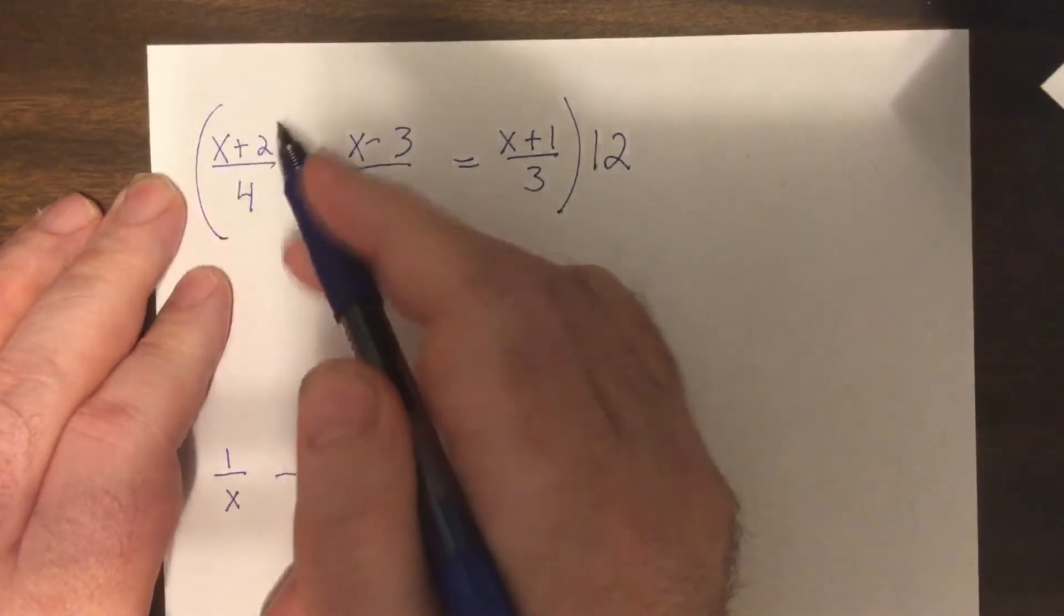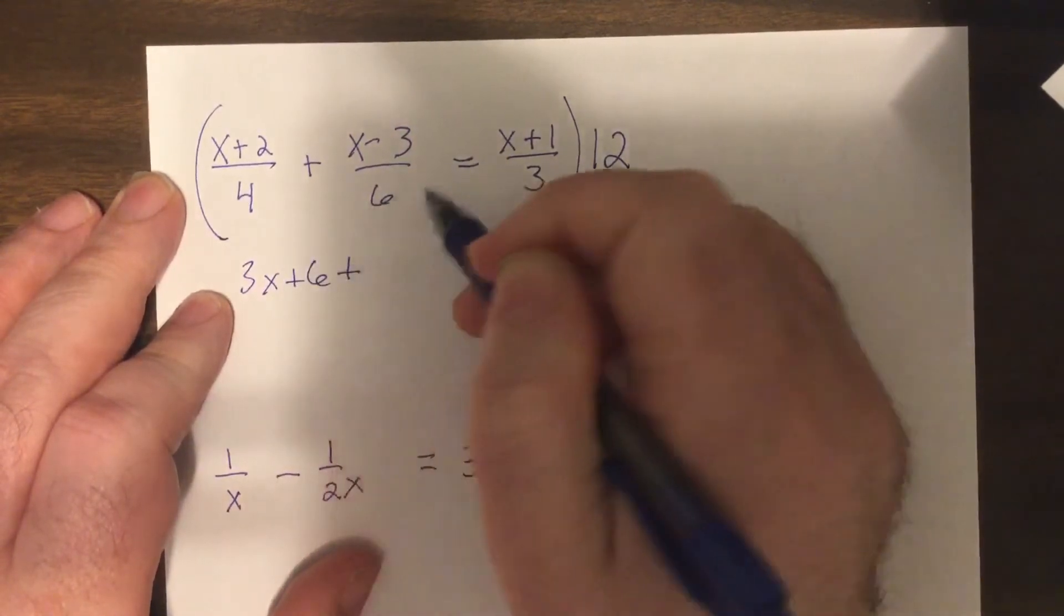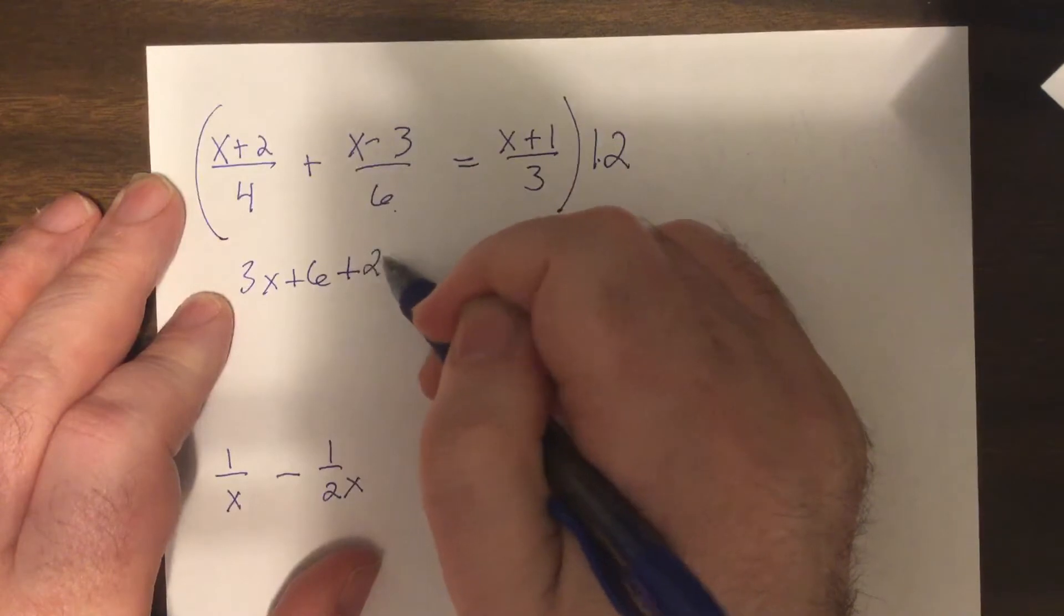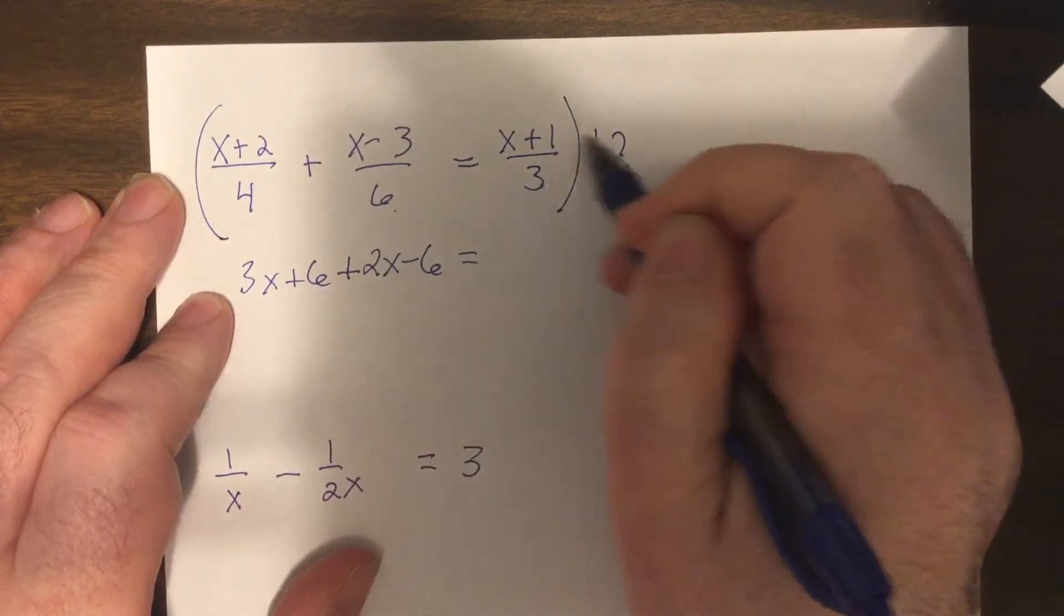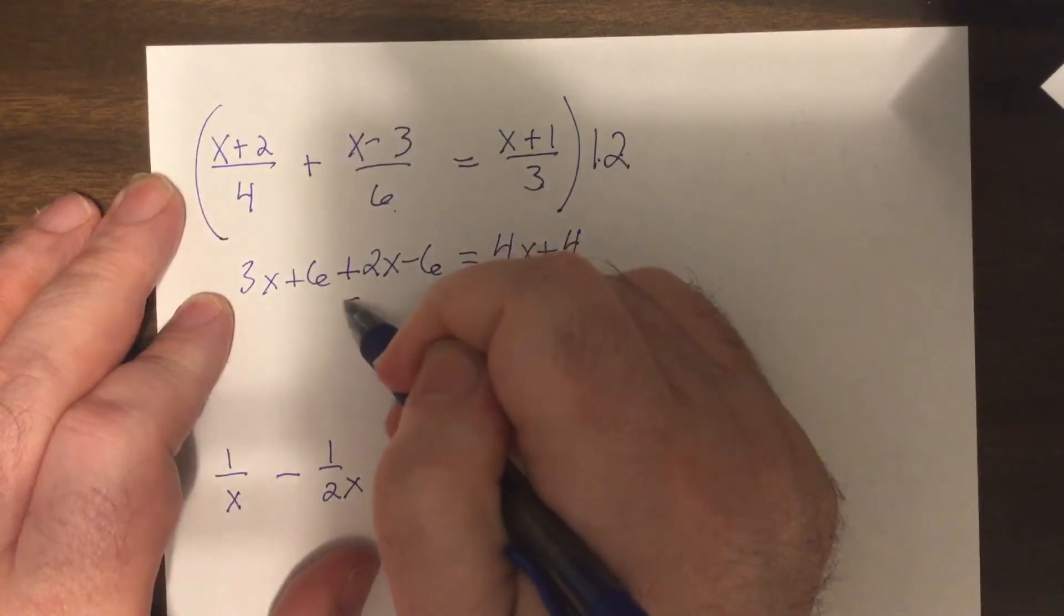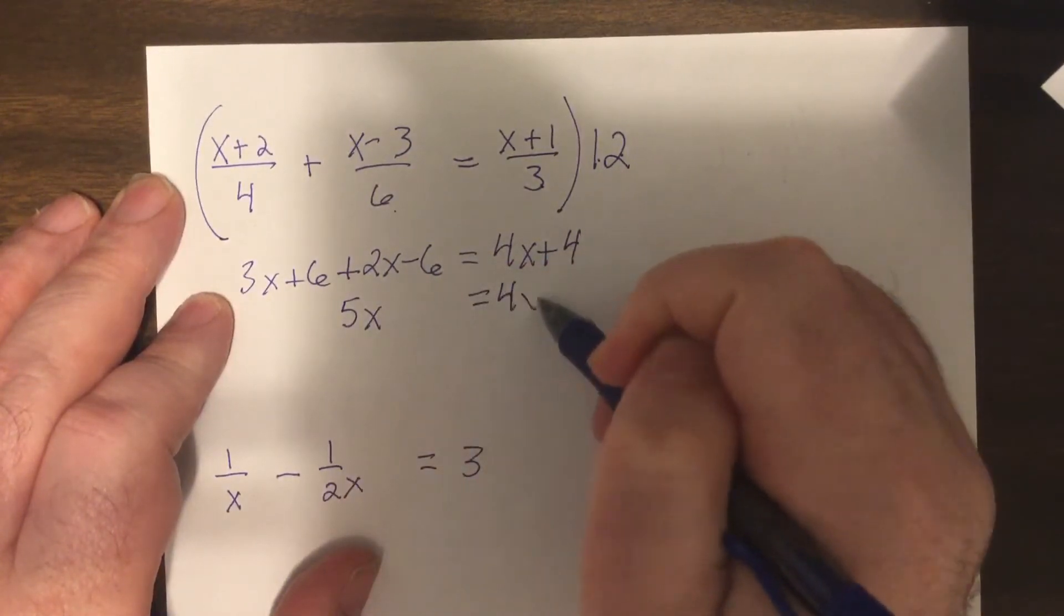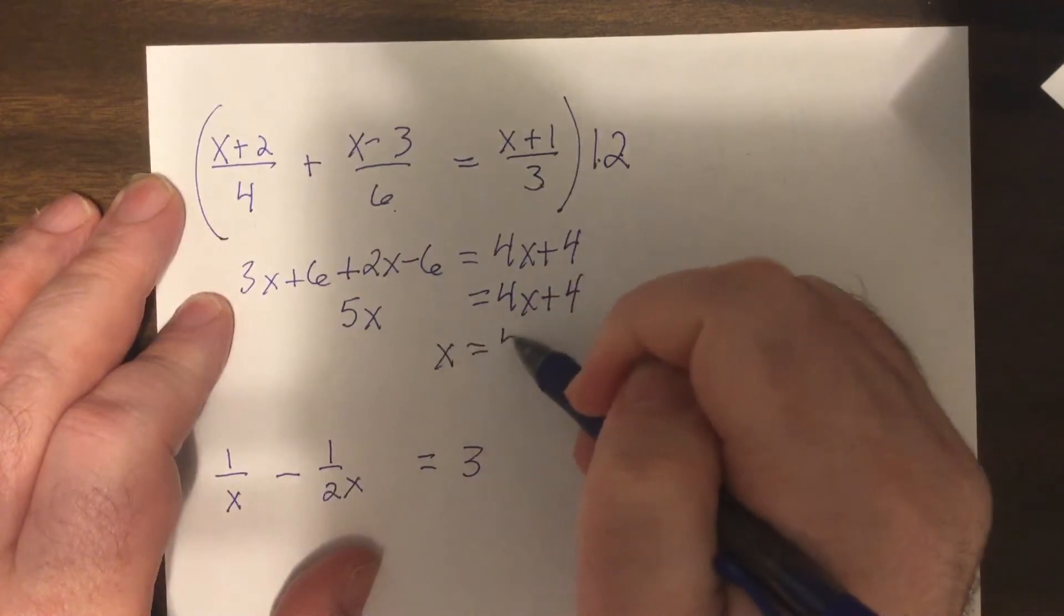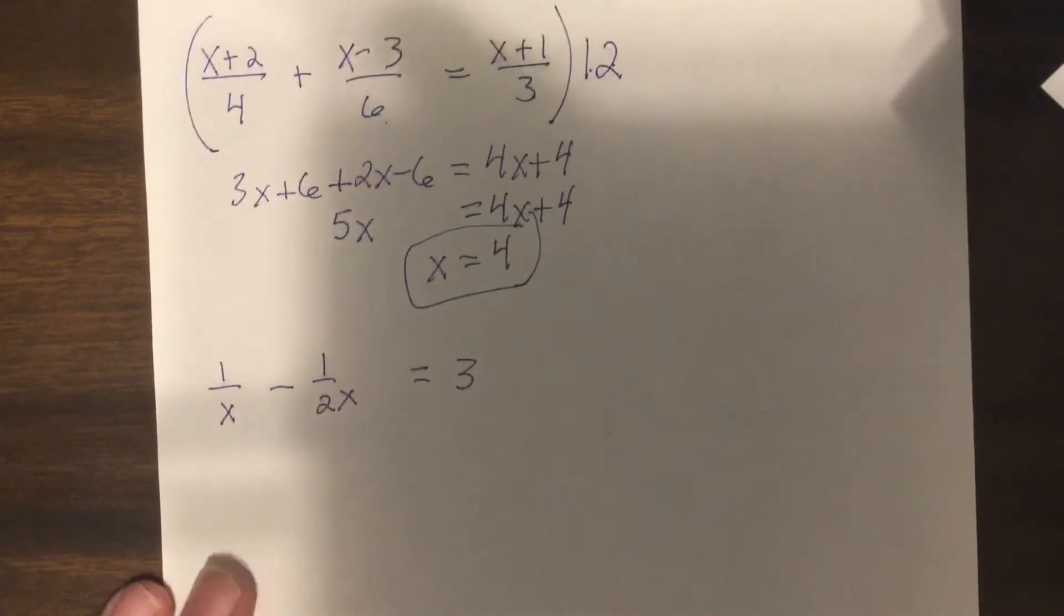So you go 4 into 12 three times, distribute the 3. Six goes into 12 twice, distribute the 2. Three goes into 12 four times, distribute the 4. So you have 3(x+2) + 2(x-3) = 4(x+1), which gives 5x plus 6 minus 4x equals 4x plus 4. Simplify: x plus 6 equals 4x plus 4, so x equals 4.